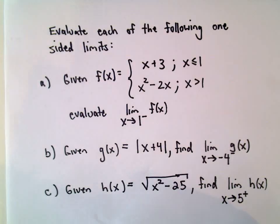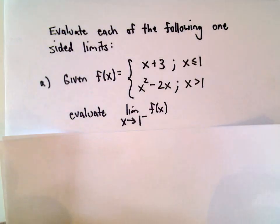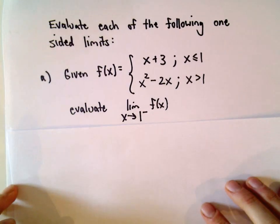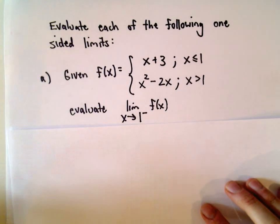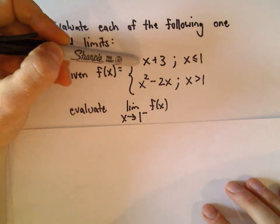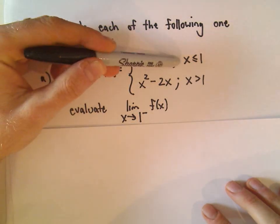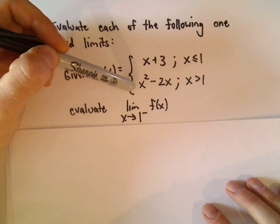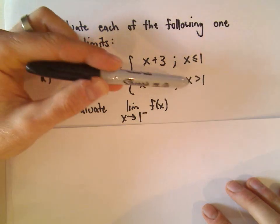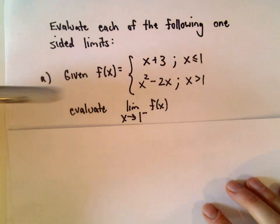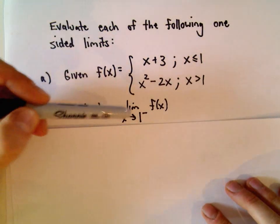So let's look at part A here first. We've got a little piecewise function: f of x equals x plus 3 if x is less than or equal to 1, and x squared minus 2x if x is greater than 1.